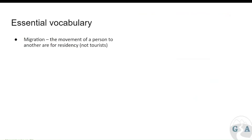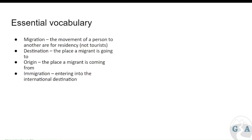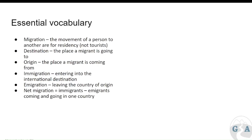Let's have a look at some central vocabulary. Migration is the movement of someone from one place to another for residency — to move full-time. So it doesn't include things like holidays. The destination is the place a migrant is going to; the origin is where they're coming from. Immigration is the word to describe people coming into the country; emigration is the word to describe people leaving the country.